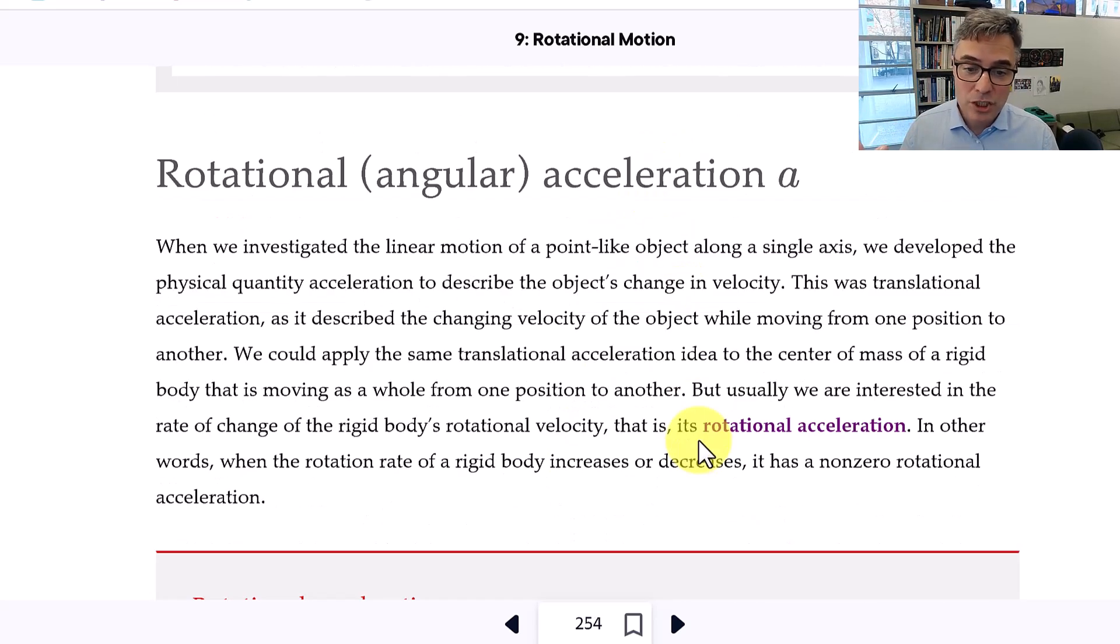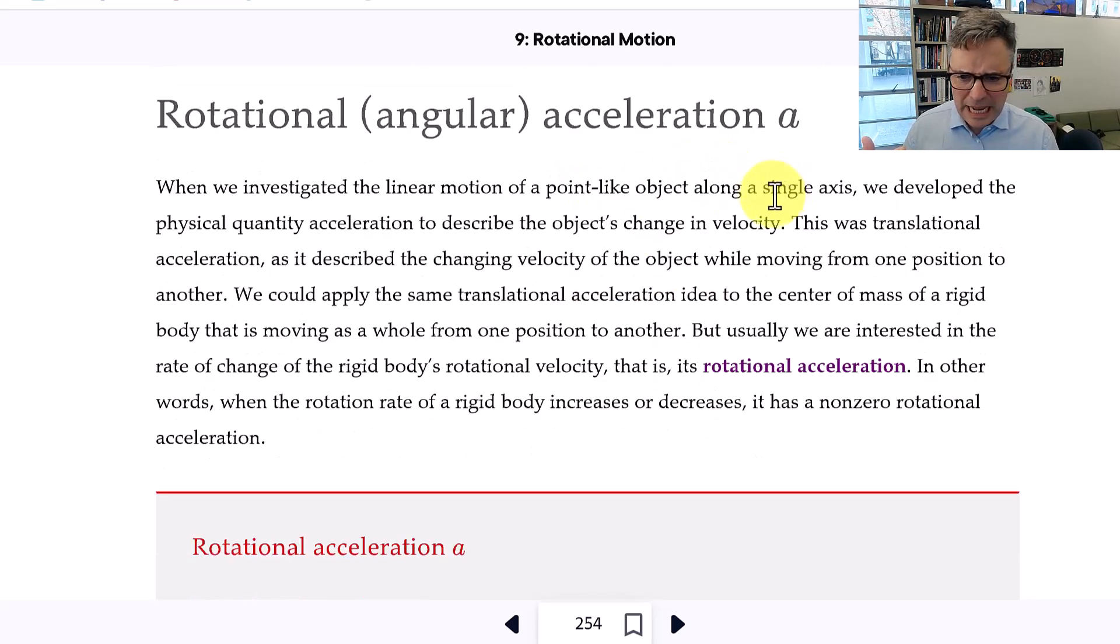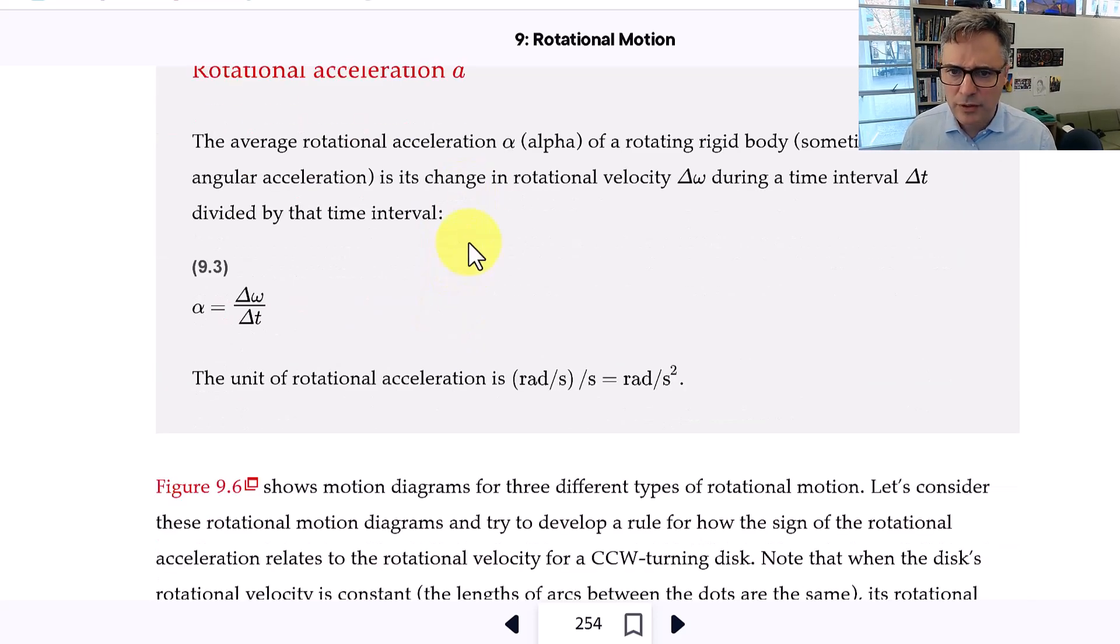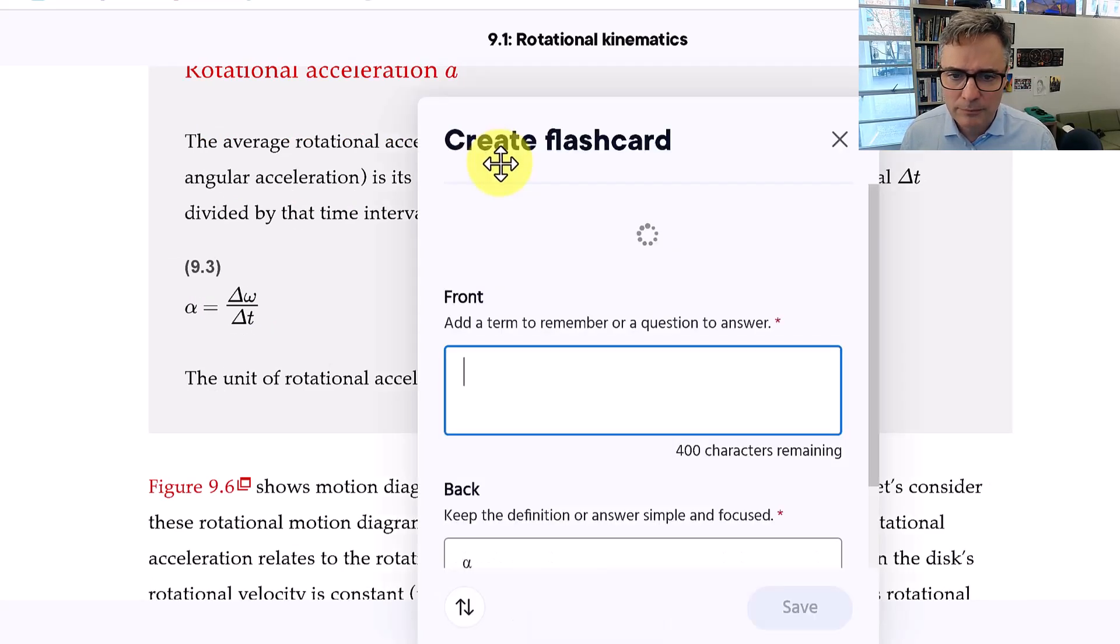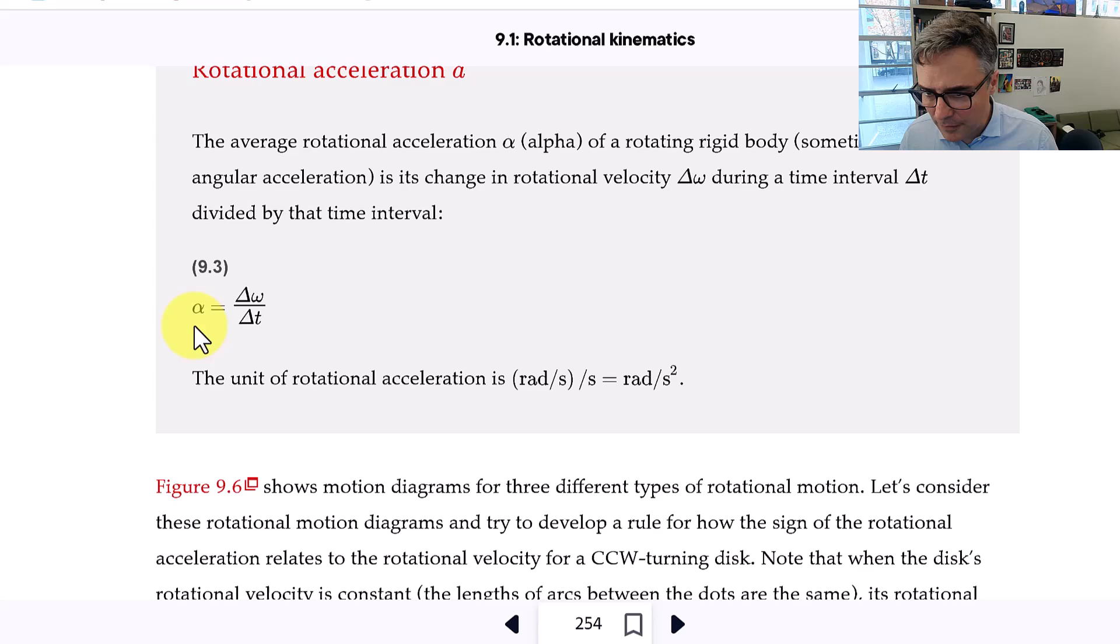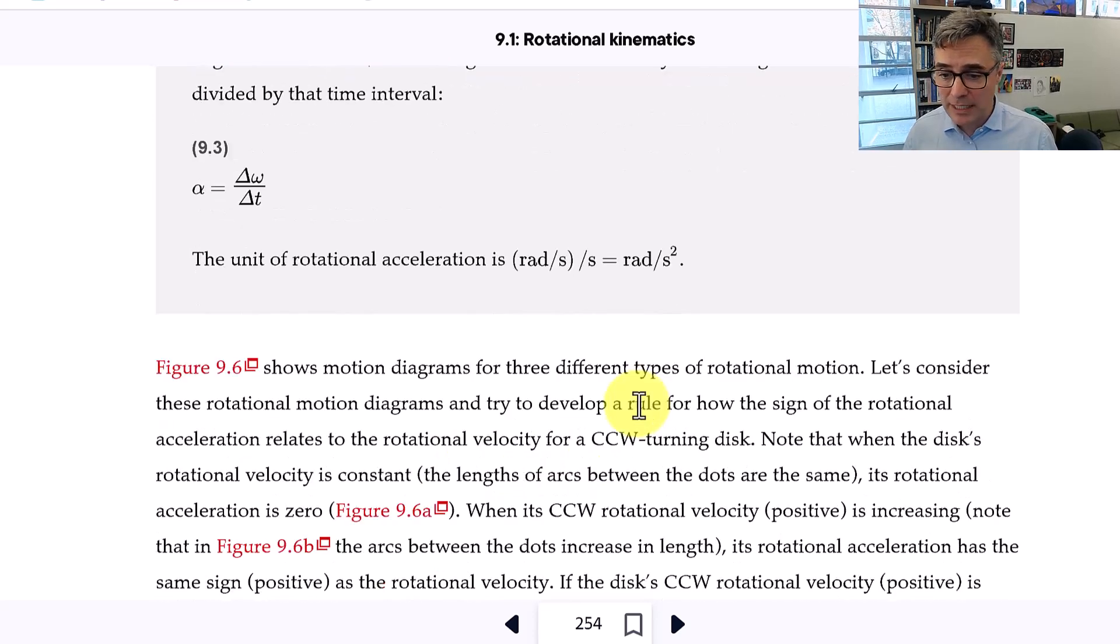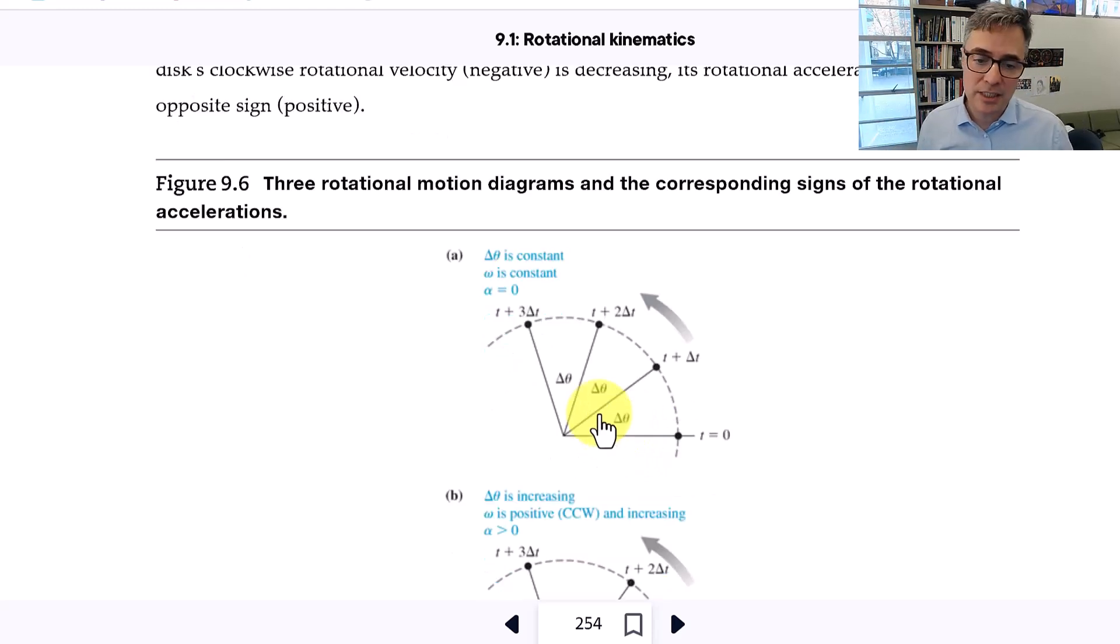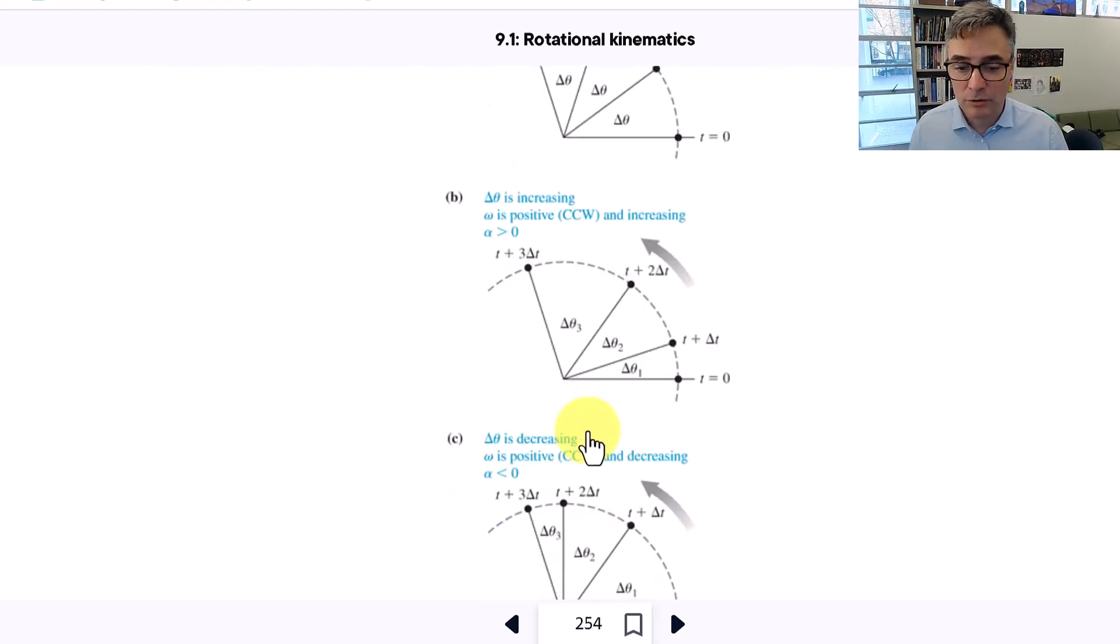And then lastly, there's rotational acceleration, which is alpha. Looks a little strange here on my screen, but this is the symbol. You can see it right there. For rotational acceleration, alpha. It's delta omega divided by delta t. And that's measured in radians per second squared. And it just measures how fast something is changing its angular or its rotational velocity.